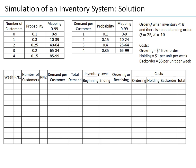For the record, this is an (s, Q) or reorder point policy: we order quantity Q when inventory drops to R or below with no outstanding order. Our current parameters are Q=25 and R=10. The costs are ordering $45, holding $1/unit/week, and back order $5/unit/week. We're going to simulate time unit by time unit — in this case, one week at a time — so we'll start with week one.